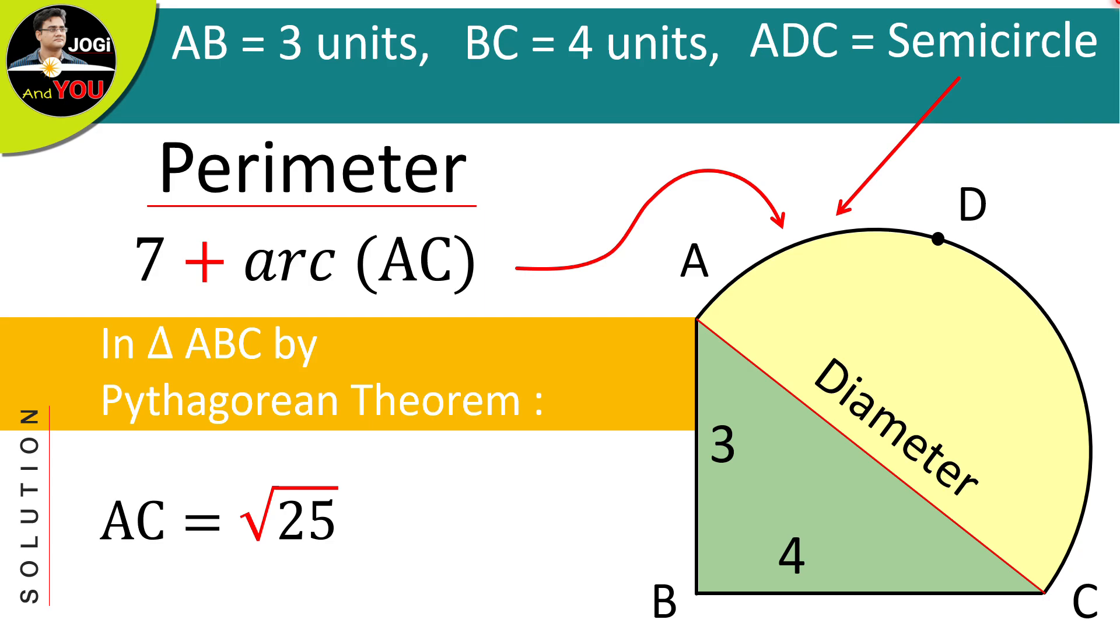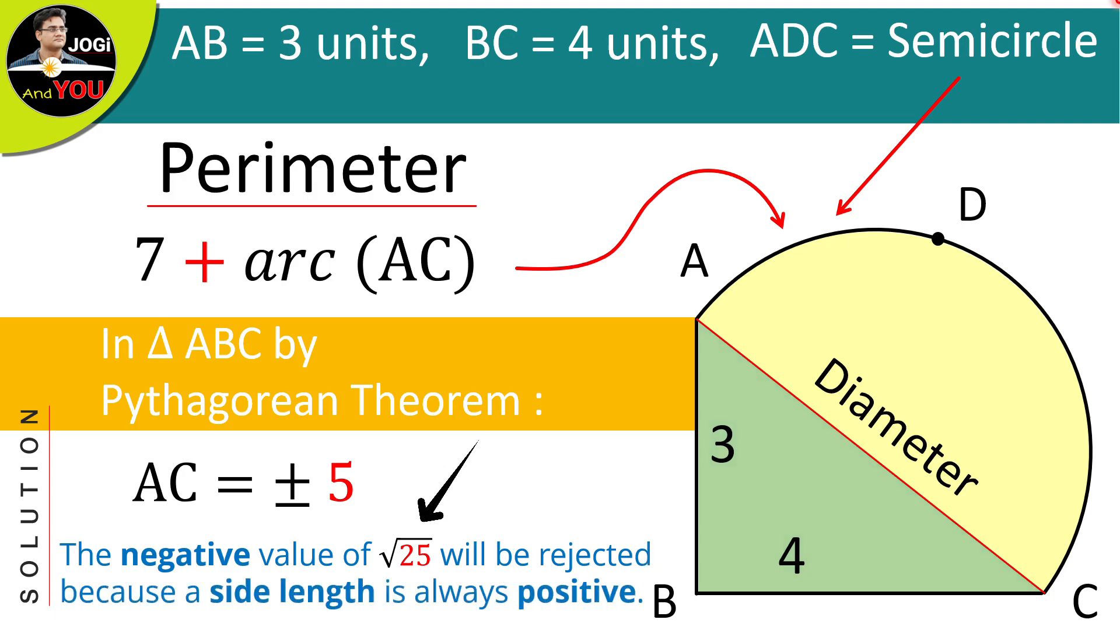Here, the negative value of square root 25 will be rejected because a side length will always be positive. So, we will only consider its positive value which is positive 5. And this will be the diameter of this semicircle.